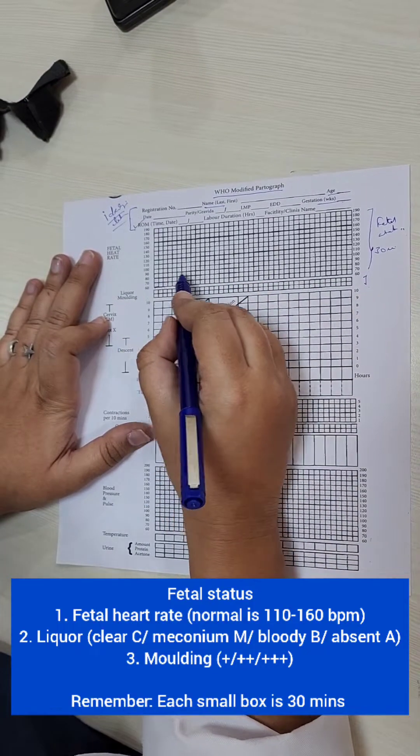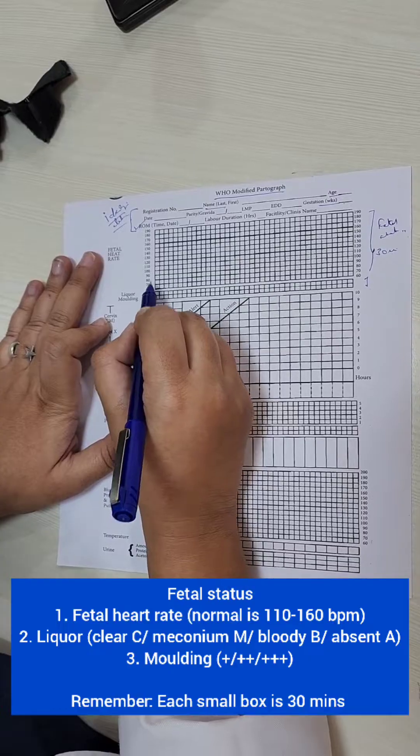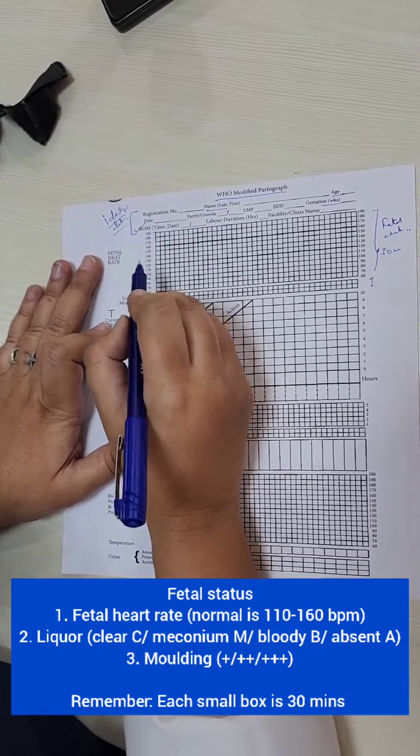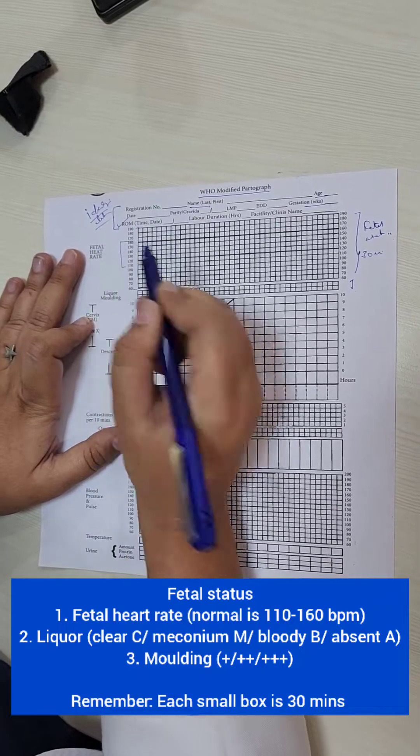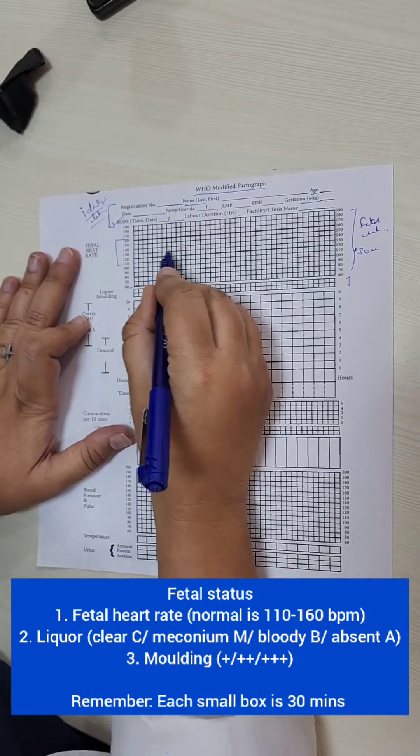So the fetal heart rate is to be checked every 30 minutes. The bottom limit and the upper limit are given and we all know that the normal fetal heart rate is between 110 to 160 beats per minute. So every half an hour this has to be plotted.